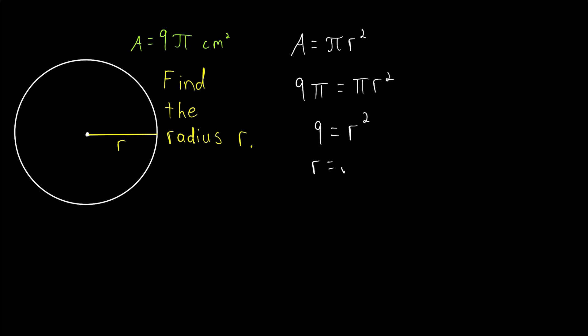The radius is the square root of 9, which of course is 3. And if our area was given in centimeters squared, the radius is going to be the square root of that unit. So the square root of centimeters squared, that's centimeters. Sometimes the numbers will be a little messier, so let's quickly do an example like that.